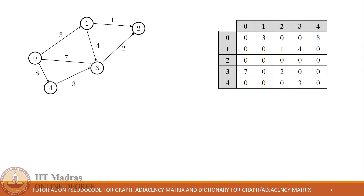Similarly, all other edges are added in the matrix. As this particular matrix stores the information about connections among all the vertices, this type of matrix is referred to as an adjacency matrix, because it tells us which vertex is adjacent to what other vertices.